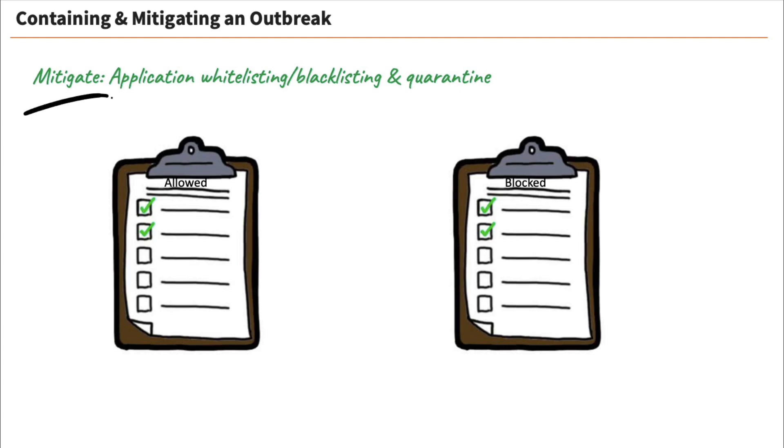Well, then we have mitigation. So how are we going to mitigate this? We're going to fix it. How are we going to do this? How are we going to prevent this from happening again? Well, we can use whitelisting and blacklisting. Specifically, we're talking about applications here. And so what is the difference between the two?